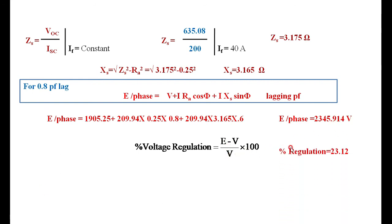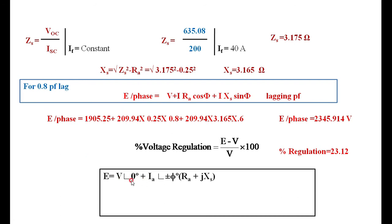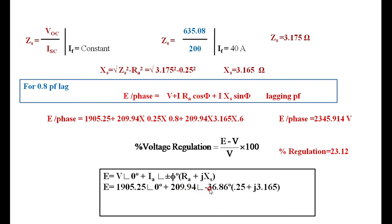Using the approximate formula, voltage regulation = (2345.94 − 1905.25) / 1905.25 × 100 = 23.12%. Using the accurate phasor formula: V = 1905.25∠0°, Ia = 209.94∠−36.86°, Ra = 0.25, Xs = 3.165, the accurate value of E = 2398.55 V, giving a slightly higher regulation value.